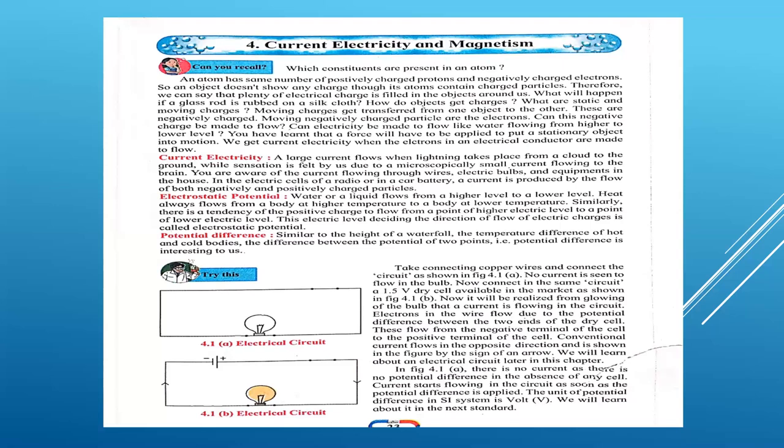The negative charge from the glass rod gets transferred to the silk cloth. Then what remains on the glass rod is an excess of positive charge, and the silk cloth has an excess of negative charge. This is due to the transfer of charges. We have two types of charges: one is called static, which is temporary, and the second is moving charges — charges which can flow.